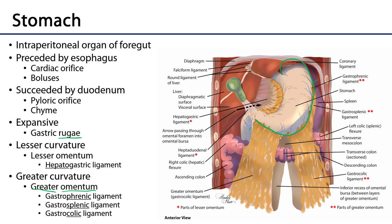There is a gastrophrenic ligament, which runs from the greater curvature of the stomach to the diaphragm. There is a gastrosplenic ligament, which connects the greater curvature of the stomach to the spleen. And then finally there is a gastrocolic ligament, which connects the greater curvature of the stomach to the transverse colon. This is often referred to as the omental apron because it hangs down anterior to the small intestines and transverse colon, and it is richly imbued with adipose connective tissue.